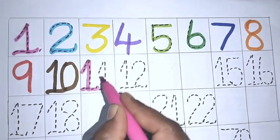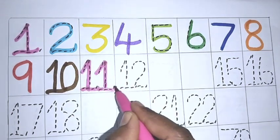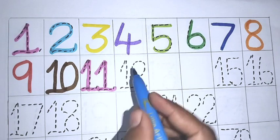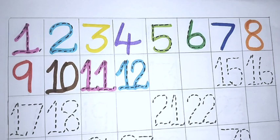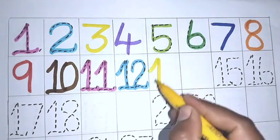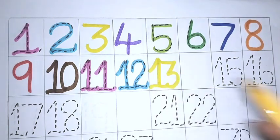One, one, eleven. One, two, twelve. One, three, thirteen.